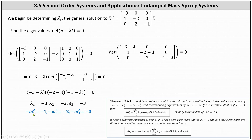These eigenvalues indicate that negative omega one squared equals negative one, negative omega two squared equals negative two, and negative omega three squared equals negative three. Therefore, the natural frequencies are omega one equals one, omega two equals square root of two, and omega three equals square root of three. We'll need these later to determine the general solution.